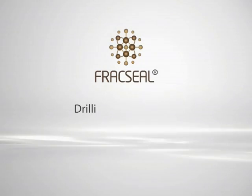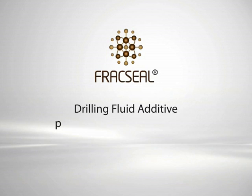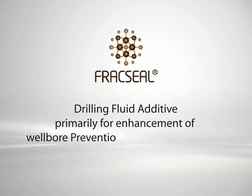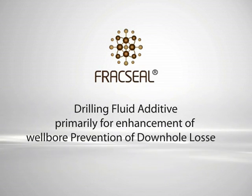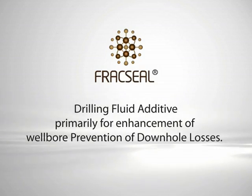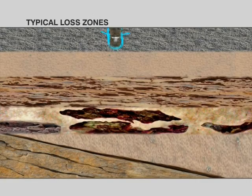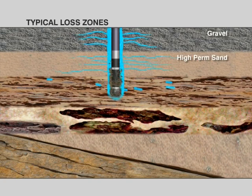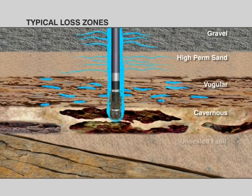Fraxel is a drilling fluid additive primarily for enhancement of wellbore integrity and prevention of downhole losses. There are several types of formations where loss of circulation is likely to occur. They are gravel, high-permeability sand, vugular, cavernous, unsealed fault, and fractured formation.